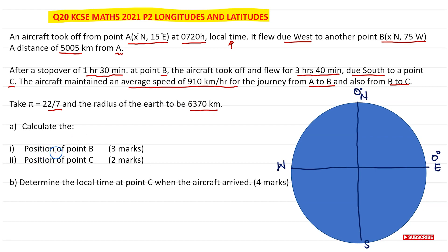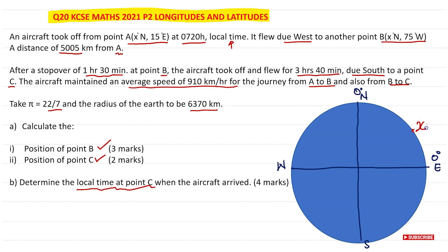We are asked to calculate the position of B and determine the local time at point C when the aircraft arrived. There's a lot of information, so let's put it on a diagram. Point A is at x degrees north — that angle starts from the equator, and we don't know where x is, so I'll place it on the diagram.